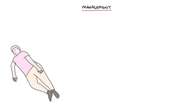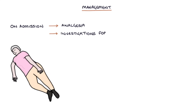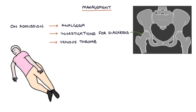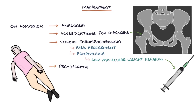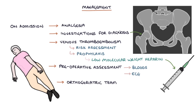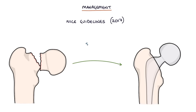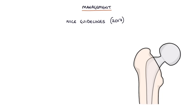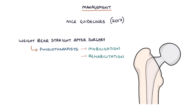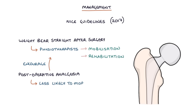On admission, patients require appropriate analgesia, investigations to establish the diagnosis such as x-rays, a venous thromboembolism risk assessment and prophylaxis usually with low molecular weight heparin, pre-operative assessment including blood tests and an ECG, and input from the orthogeriatric team. NICE guidelines updated in 2017 state that surgery should be carried out the same day or the day after admission — within 48 hours. The operation should allow the patient to weight bear straight after surgery, enabling physiotherapists to start mobilisation and rehabilitation as soon as possible. Post-operative analgesia is important to encourage early mobilisation.